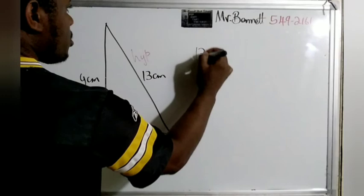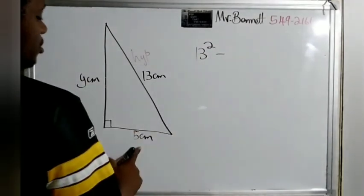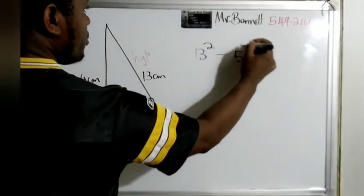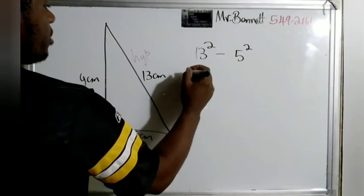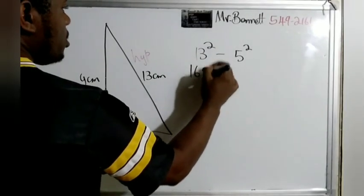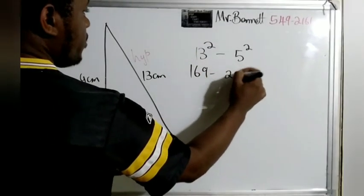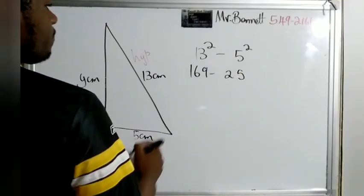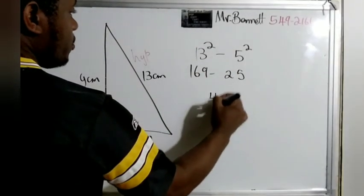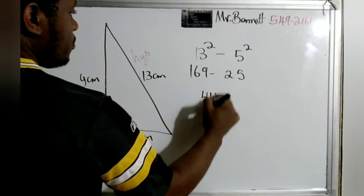Let's do that. We take this side squared, which is 13², minus 5². So 13 times 13 is 169, minus 5 times 5 is 25. That gives us 144.